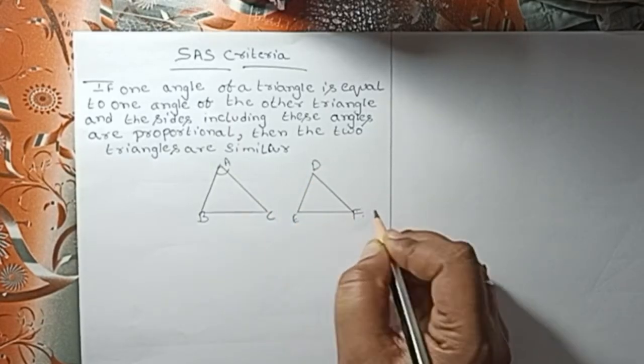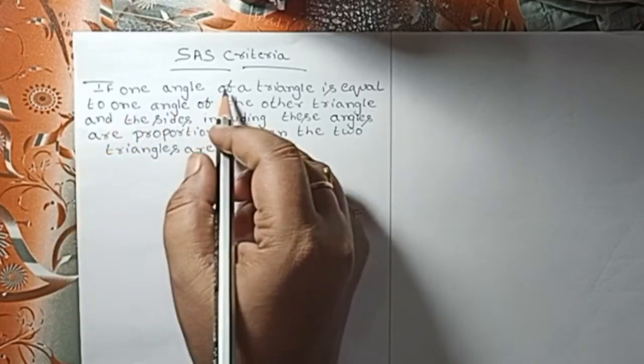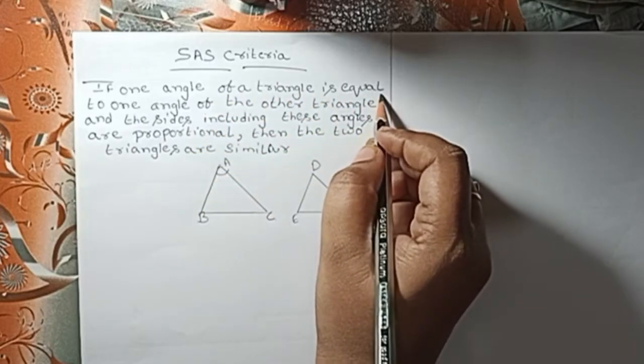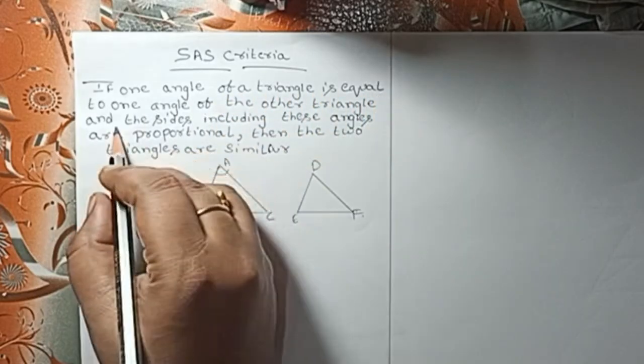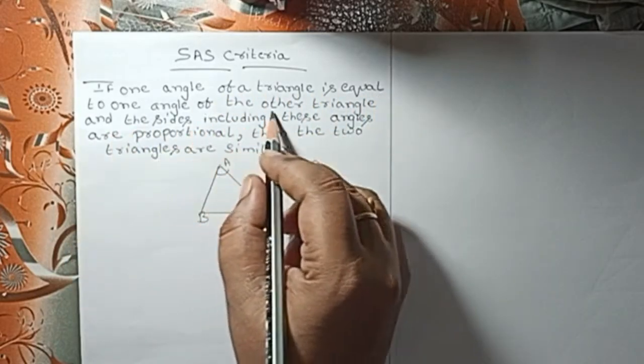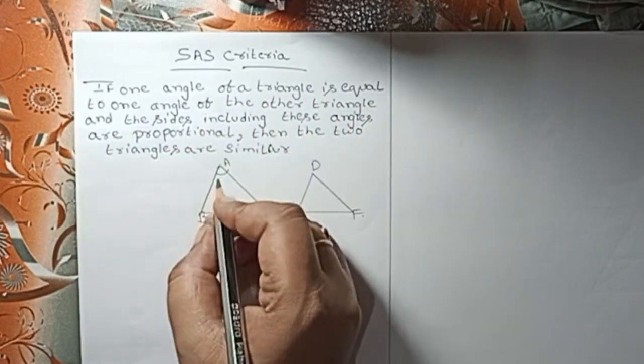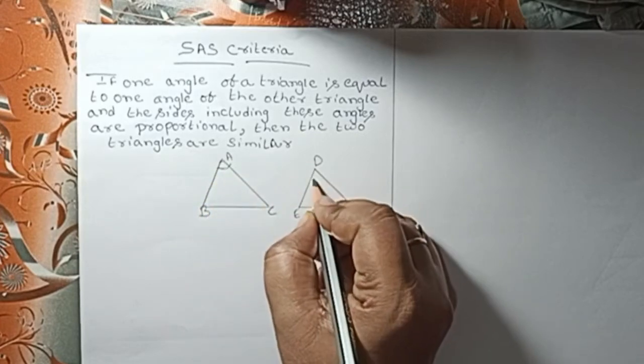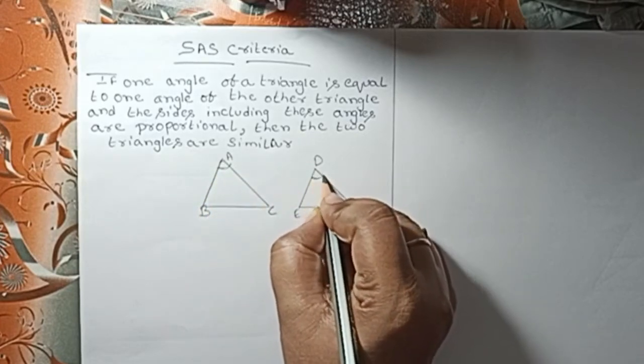If one angle of a triangle is equal to one angle of the other triangle — that is, angle A is equal to angle D.